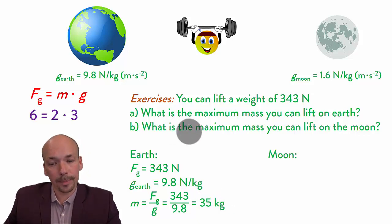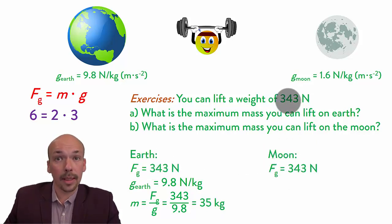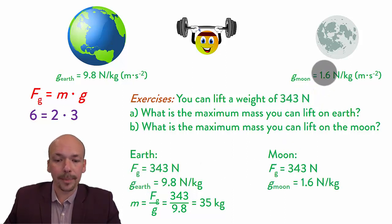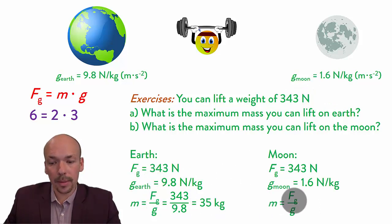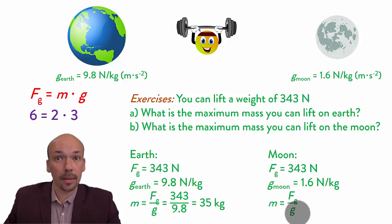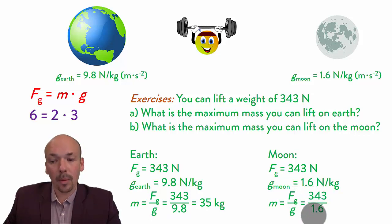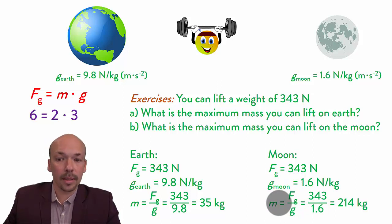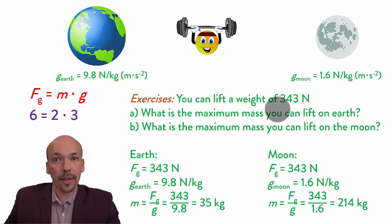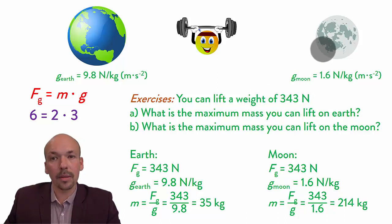Now let's see what you can lift on the moon. On the moon, the Fg is the same — 343 newtons — because you can still exert the same force. But g is different; now it's 1.6. Using the same equation, Fg divided by g: 343 divided by 1.6, and the answer is 214 kilograms. So that's the mass you can actually lift when you are on the moon with the same force. You do not get stronger — however, the effect of your strength is just greater because there is lower gravity. So on the moon, you can lift heavier objects.